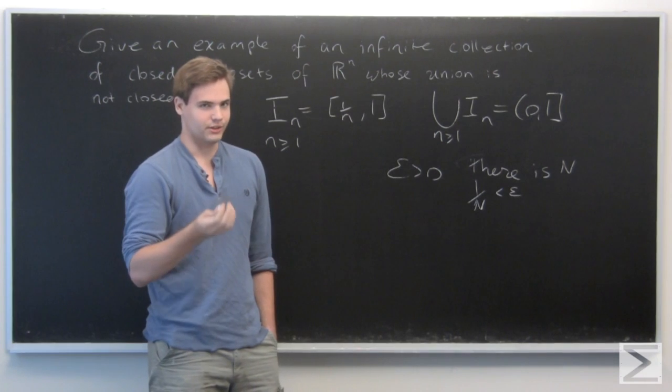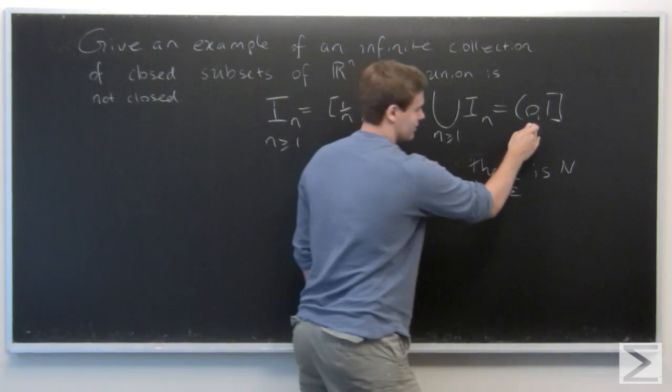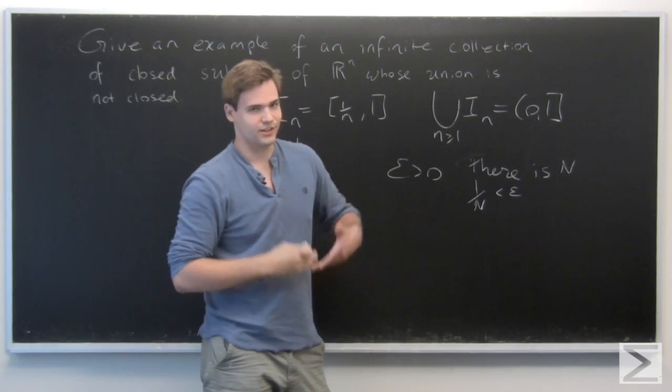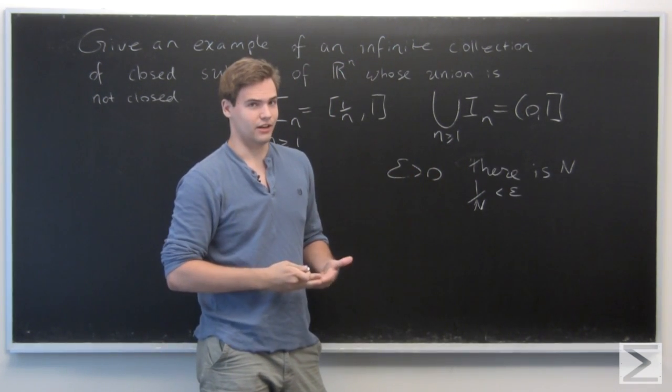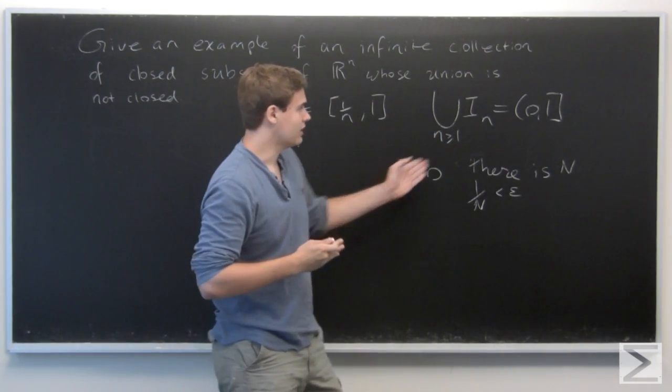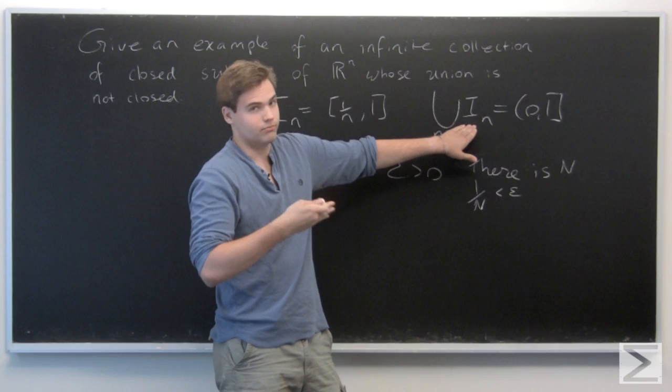So basically, what this shows is that you can take any real number close enough to 0, and there's some natural number such that its reciprocal is less than that epsilon. And basically, that shows that given that epsilon, it would have to lie in one of these intervals for some big N.